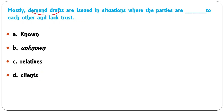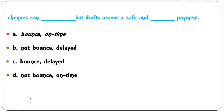Checks can bounce but drafts assure a safe and on-time payment. The options are: bounce/on-time, not bounce/delayed, bounce/delayed, not bounce/on-time. The correct answer is: checks can bounce but drafts assure a safe and on-time payment.